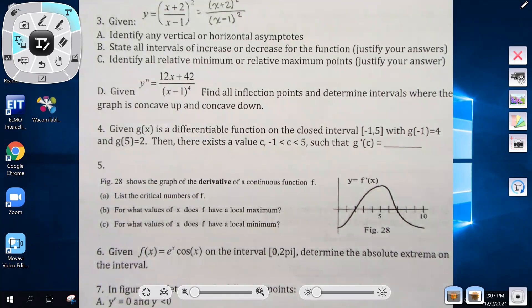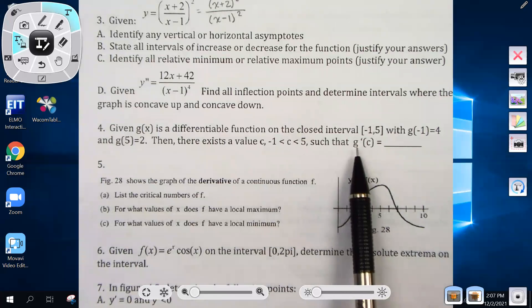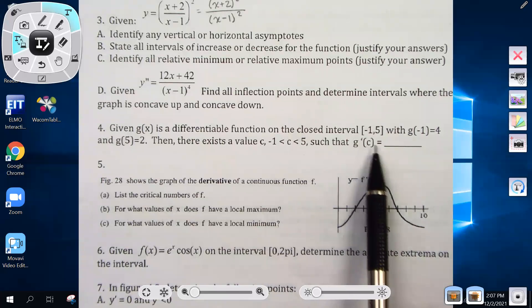It's the Mean Value Theorem because it's telling me that the function is differentiable. If it were talking about Rolle's Theorem, then it would have to say that it's differentiable and continuous. Because it's talking about the Mean Value Theorem, that means there is a value c such that g'(c) equals the slope between the two points.